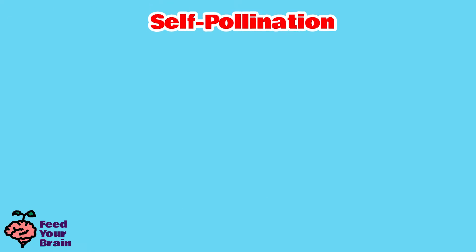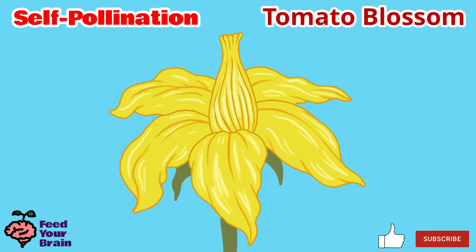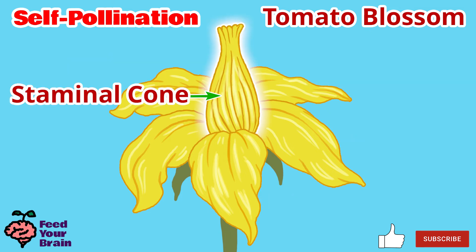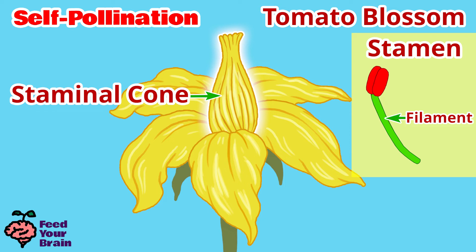Now let's look at self-pollination. Let's look at the tomato plant as an example, because the tomato plant is a self-pollinator. Self-pollinating means the flowers contain all parts necessary to fertilize its ovules, so more than one plant is not needed for reproduction. Here are the petals, here is the staminal cone. In a typical flower, the stamen has a thin filament with the anther on top full of pollen grain. But on the tomato flower, the stamen are all stuck together and form a cone shape — so it's called a staminal cone.